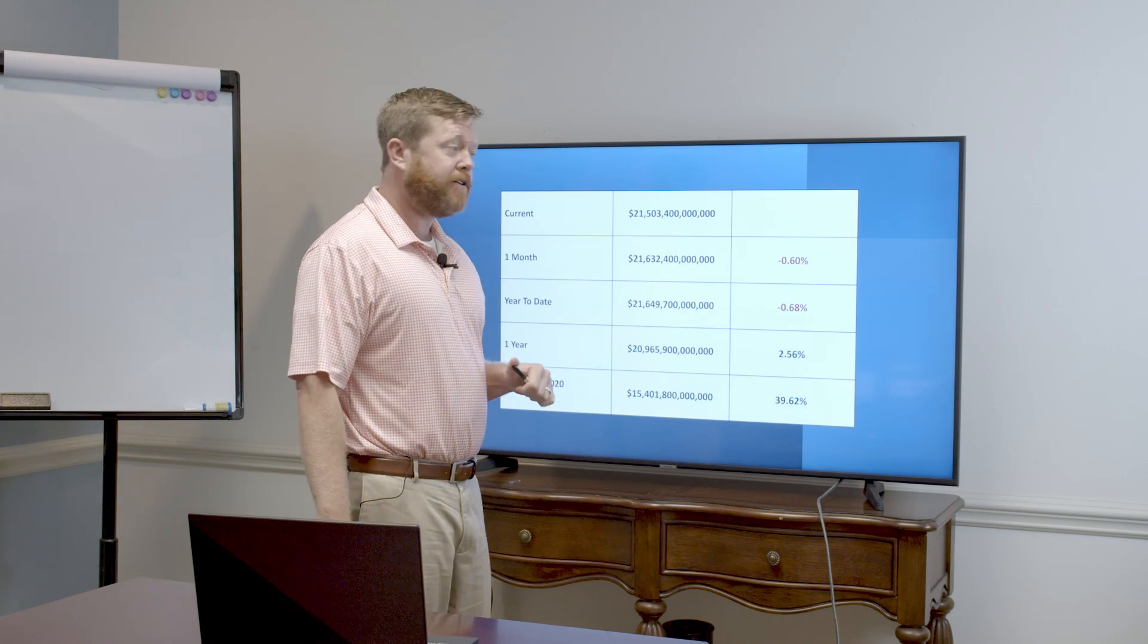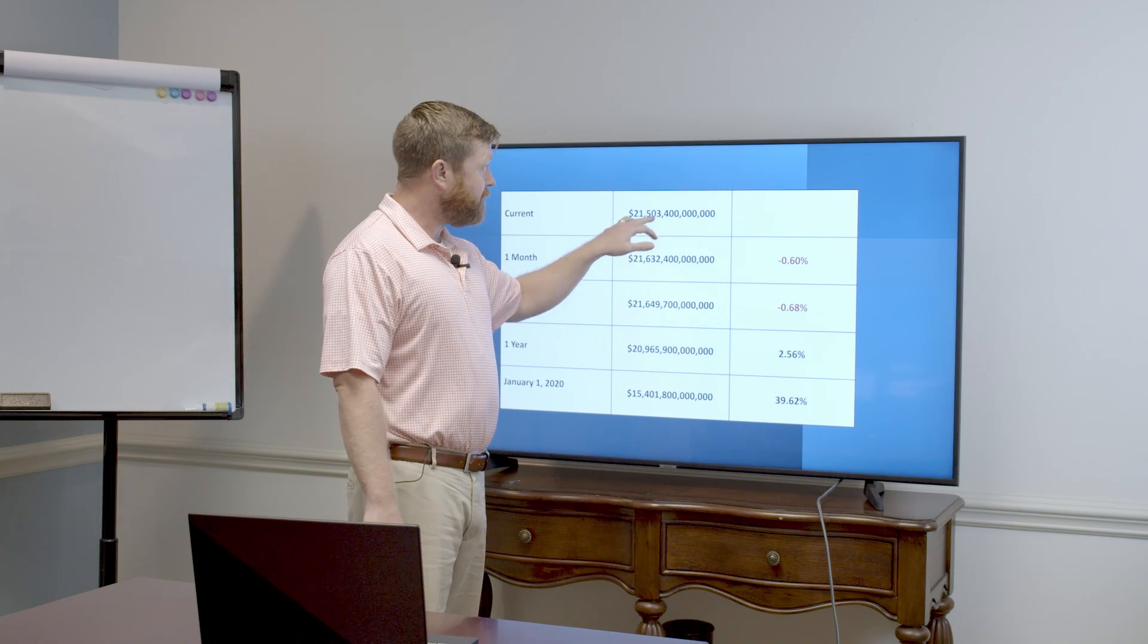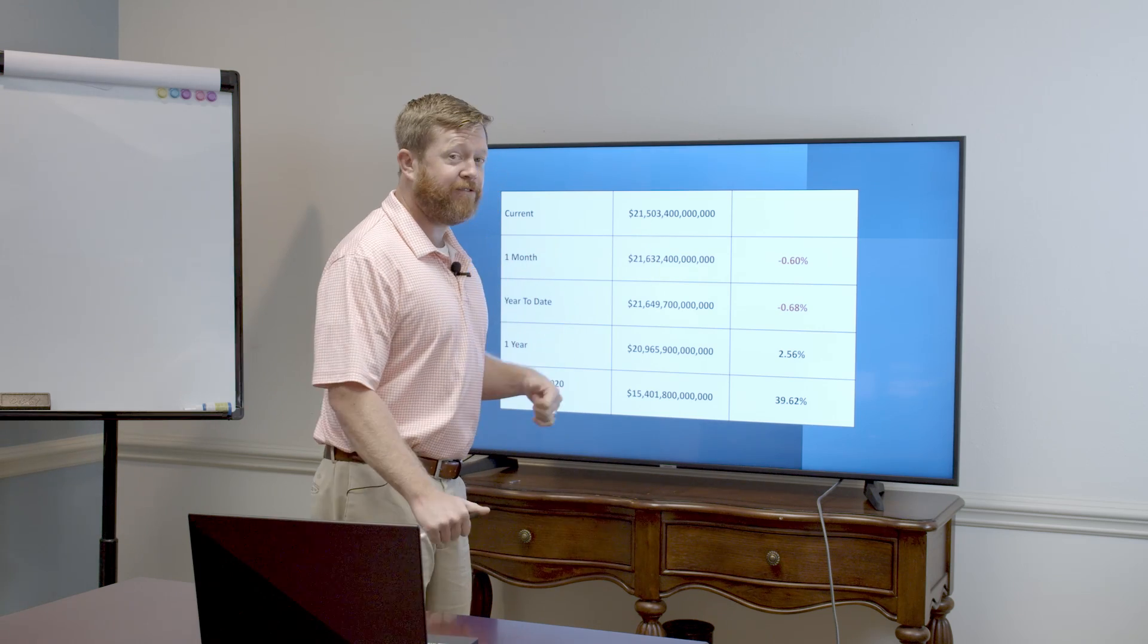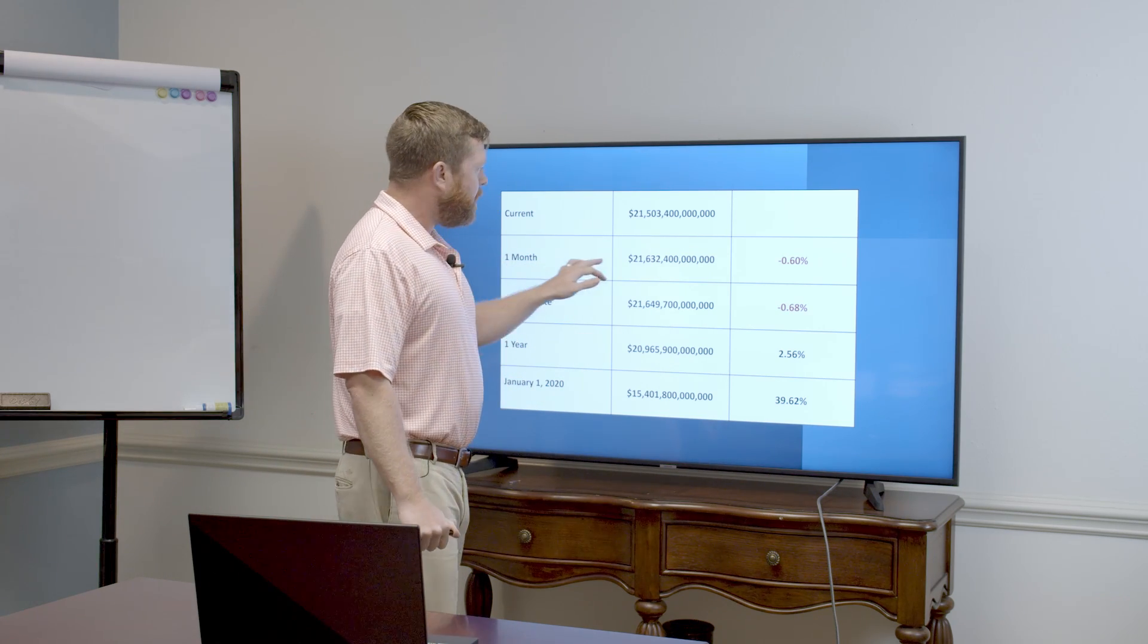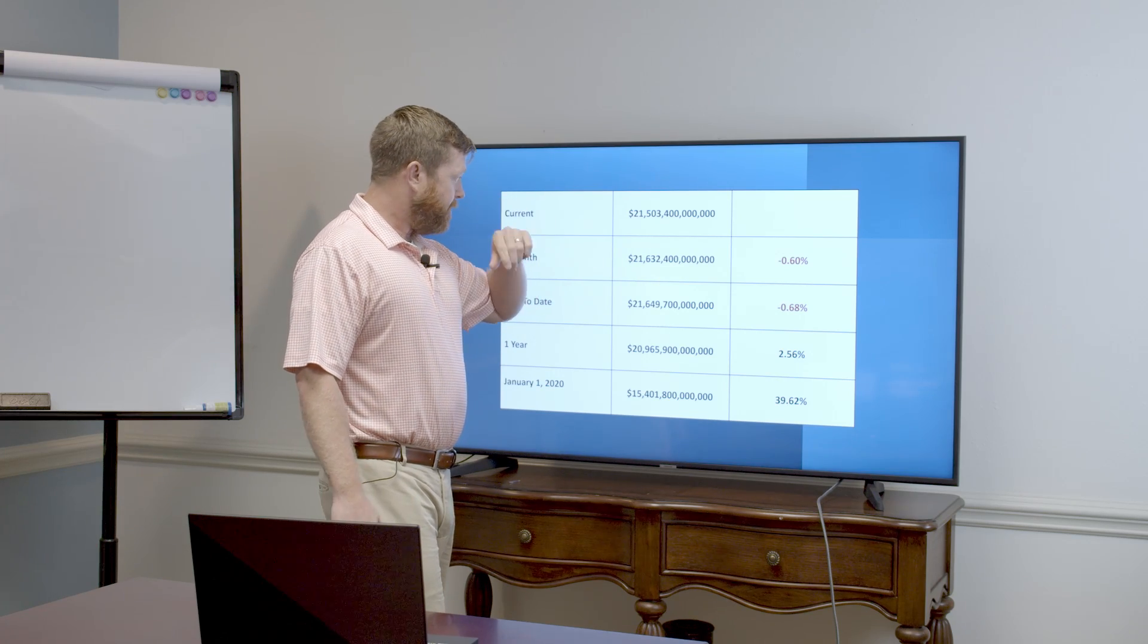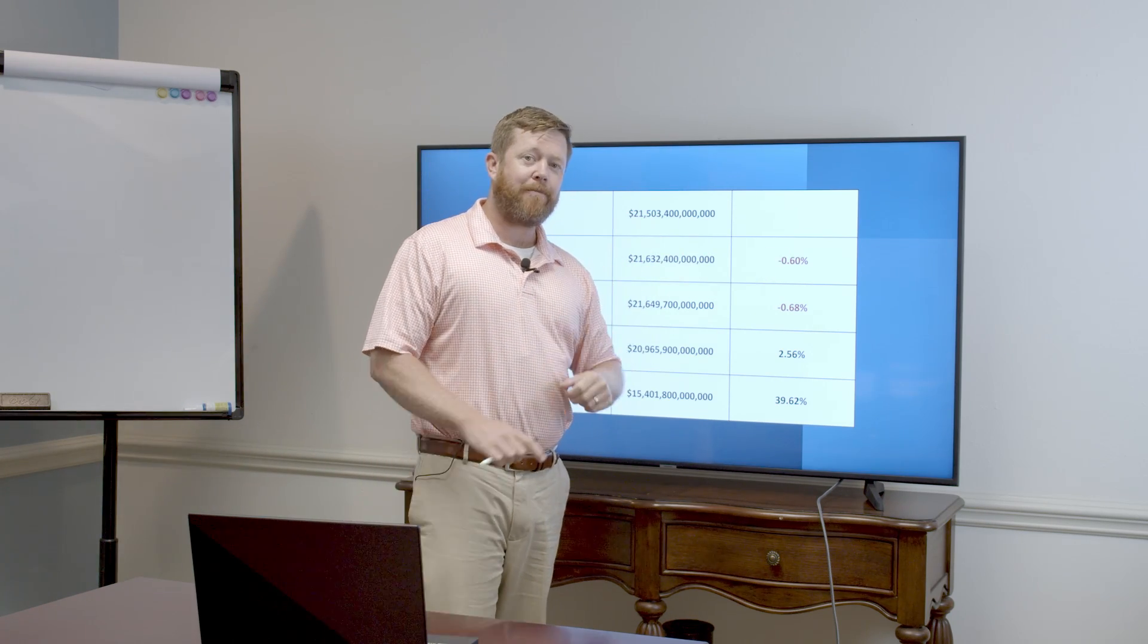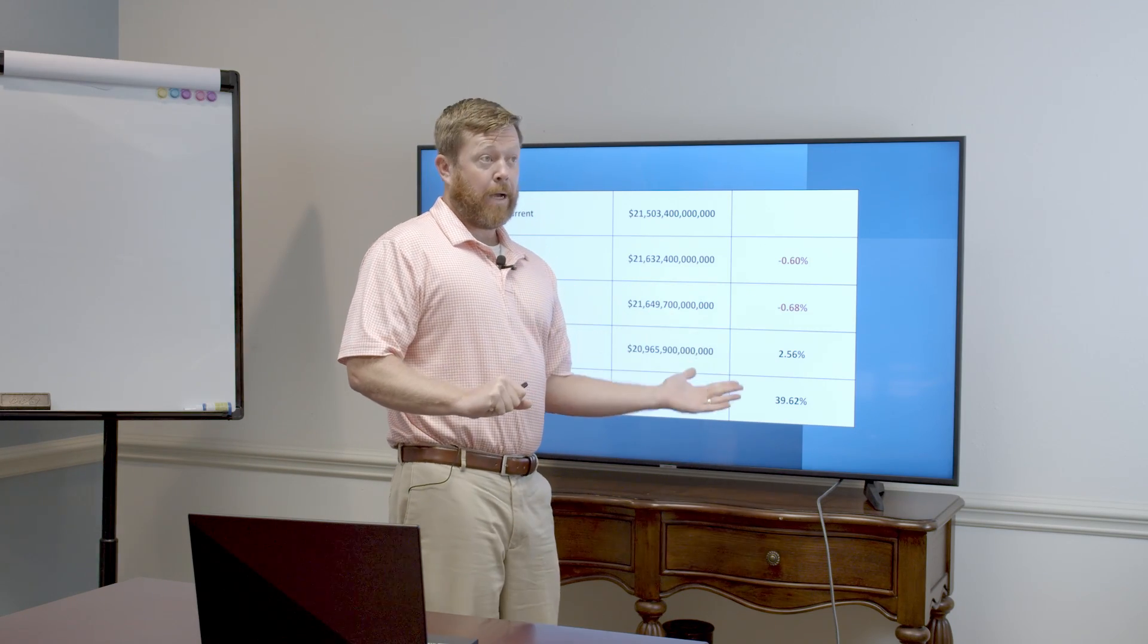currently $21,503,400,000,000 in circulation. And this is just how they truncate at the four, so I throw in the zero so you remember what commas look like. One month ago, we were at $21,632,000,000. So we have actually decreased our money supply by six-tenths of a percent. Cool.